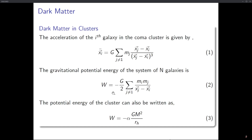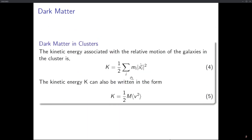Since we have derived the relation for potential energy, we now move to the kinetic energy of the relative motion of galaxies in the cluster. That is (1/2) M V², summing over all i galaxies: (1/2) times the sum of m_i x_i-dot squared, where m x_i-dot is simply the velocity V.